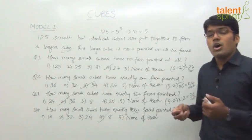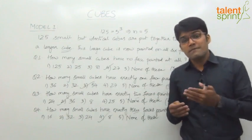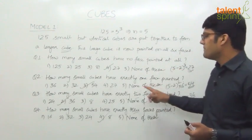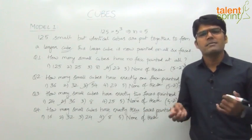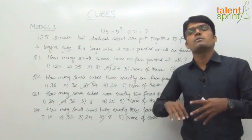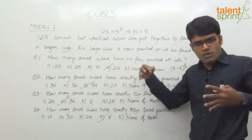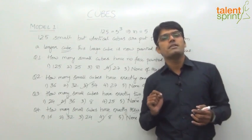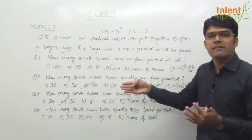Likewise, 'at least 1 face painted' means 1, 2, or 3 faces painted. You can add: 54 plus 36 plus 8 equals 98. Alternatively, like in permutations and combinations, at least 1 equals total minus none. So 125 minus 27 equals 98 — the same answer. Be careful about the wording: is it exactly 1, 2, or 3 faces, or at least 1, 2, or 3?